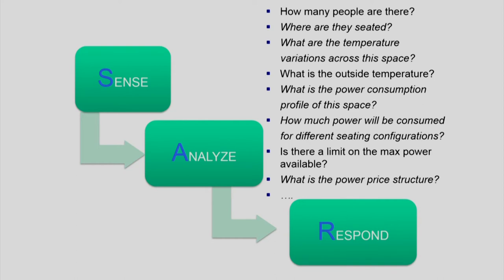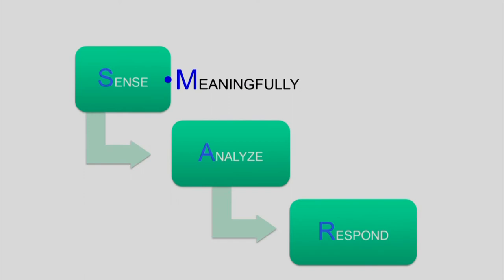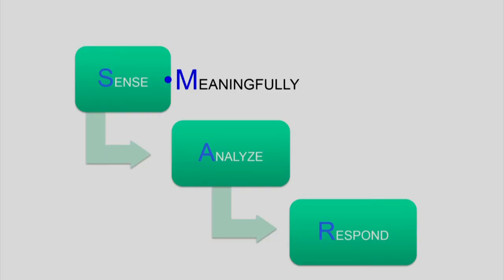In general, you can answer these questions through analysis: how many people are there, where are they seated? For example, if I take a picture with a camera in front of the auditorium, I know where they are seated. I can do temperature sensing to figure out variations across the space, look at outside temperature, the power price structure — all these analysis capabilities let me respond in a meaningful way. I also need to know what to sense at any point in time, so I can focus on certain values to make my analysis more meaningful.